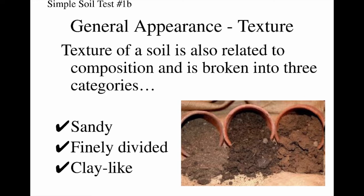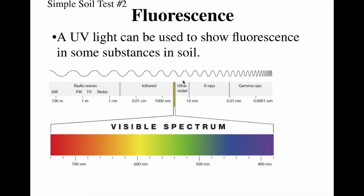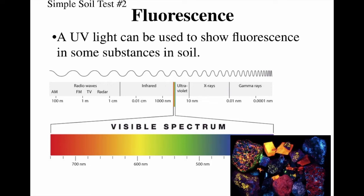Along with the general appearance of the soil, there are other tests we can do to look at its physical properties. One thing we can do is check the soil's fluorescence. Fluorescence basically means we take a UV light — which produces waves just a bit more energetic than our visible spectrum — and shine it onto a soil sample. Some components in soil will fluoresce, or glow, in the presence of UV light. Here is an example of some minerals fluorescing under a UV light, giving us a good idea of what they're made of from visual inspection alone.